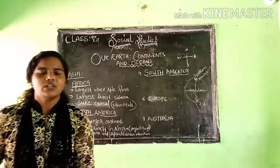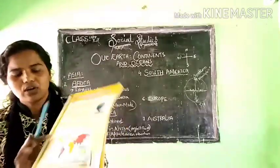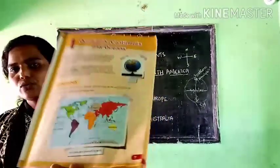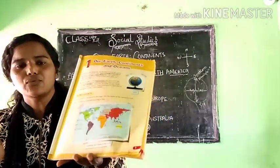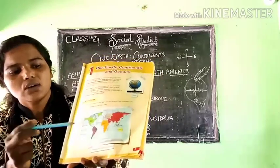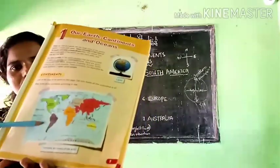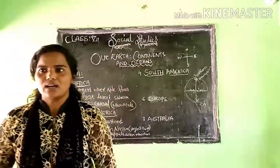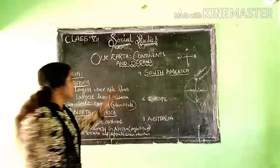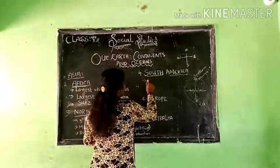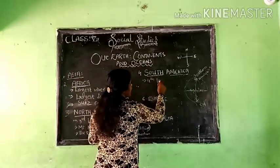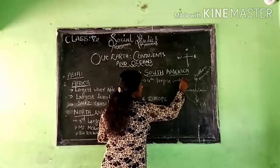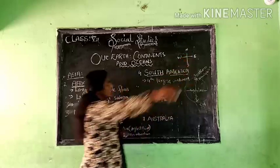Let's take our textbook. Not everyone may have a globe at home. In the textbook, this is North America, and this is South America below it. South America is the fourth largest continent.